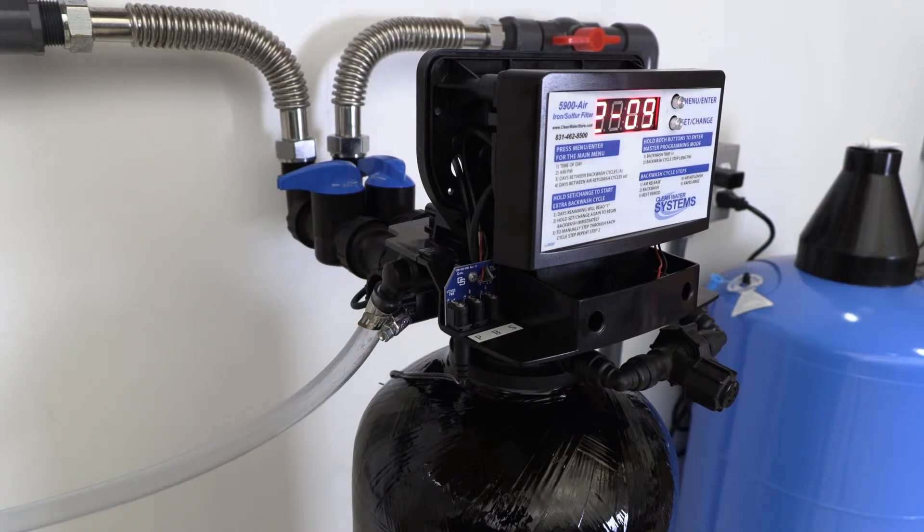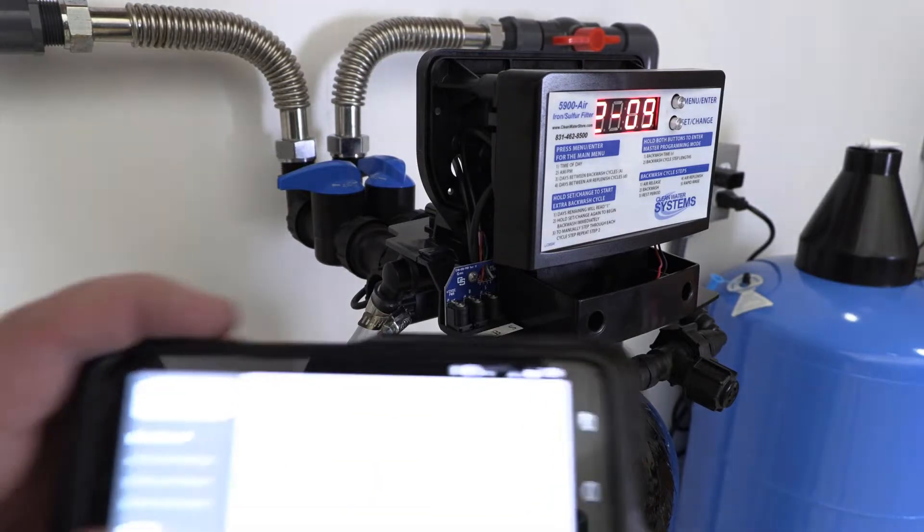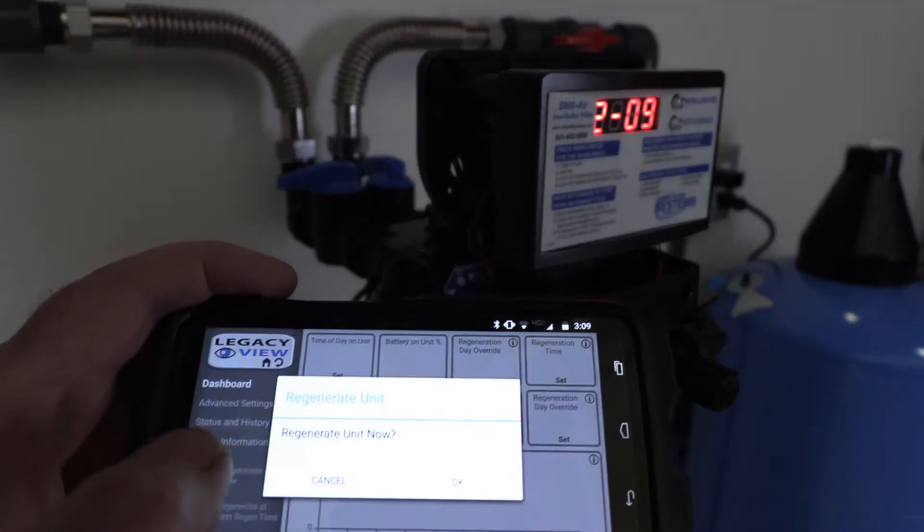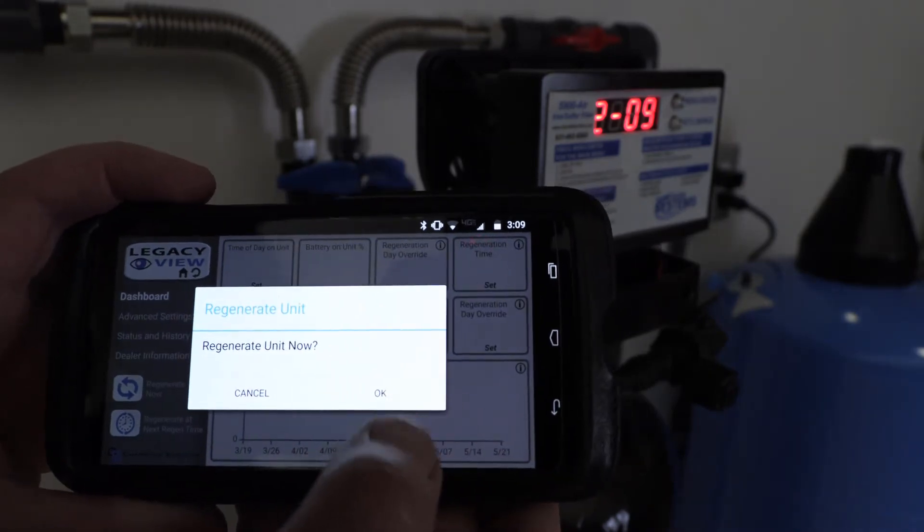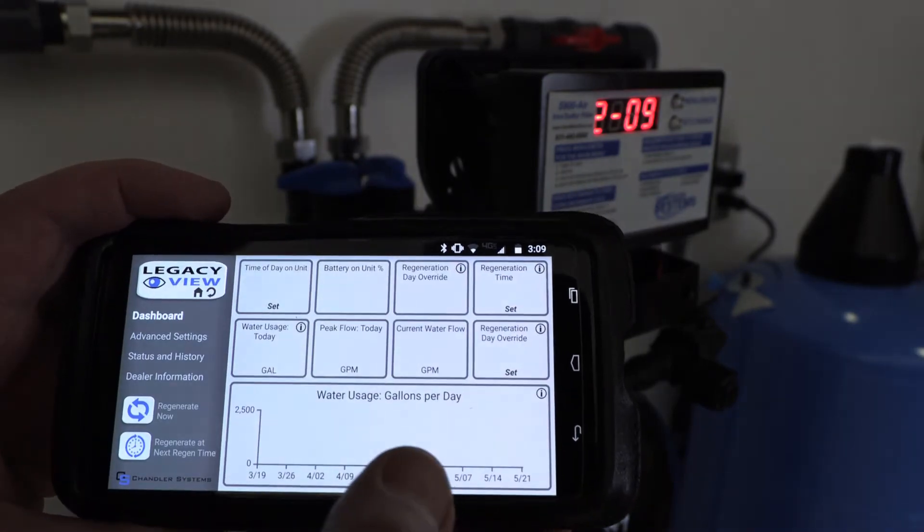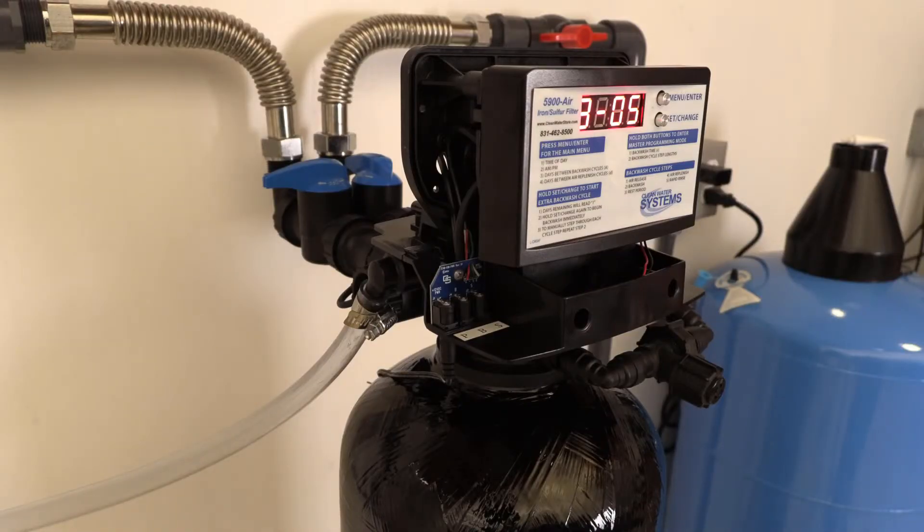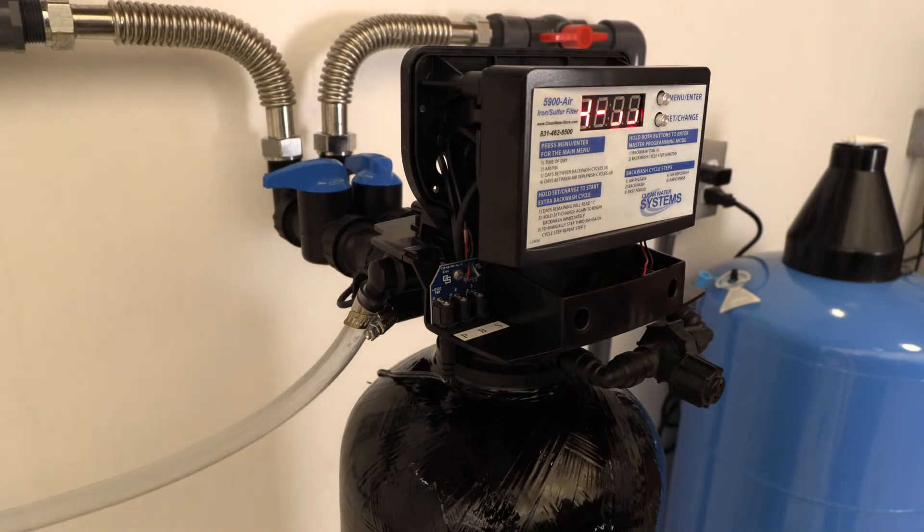So I'm going to force it into step five, which is the rapid rinse. I'll click the regeneration now button, hit OK, and we'll go ahead and go to the next regen step. Again, we're bypassing three and four and going right into five.